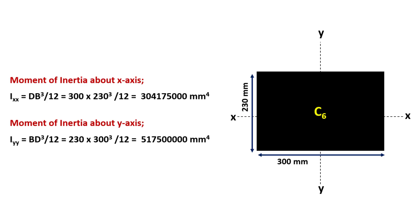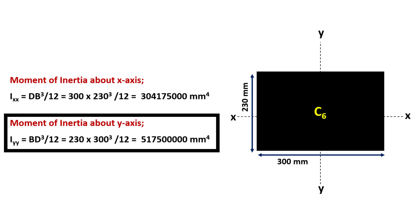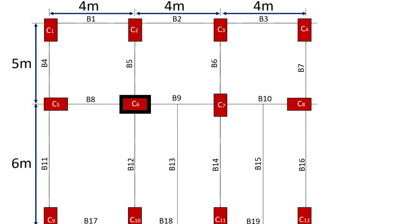The moment of inertia about the X axis will be D·B³/12, where D is 300 mm and B is 230 mm. The moment of inertia about the Y axis will be B·D³/12. As you can see, the moment of inertia about the Y axis is greater. Therefore, the major axis of bending will be the Y axis. We have seen that the dimension of the column perpendicular to B8 and B9 will need to resist a greater moment than the one perpendicular to B5 and B12. Therefore, the depth of column 6 will be kept perpendicular to the span of B5 and B12. Hence, the assumed orientation of column 6 is right.